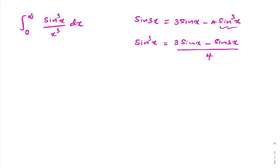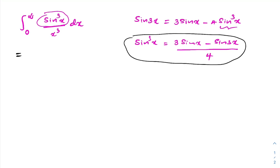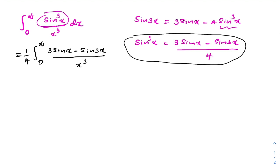I am going to plug sin³(x) into the numerator, so we can write the integral equal to 1/4 times the integral from 0 to infinity of (3 sin(x) − sin(3x)) / x³ dx.